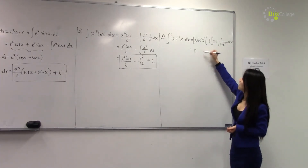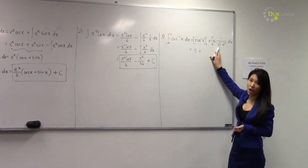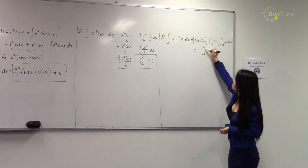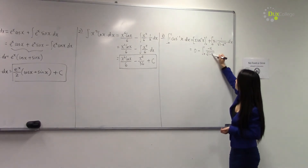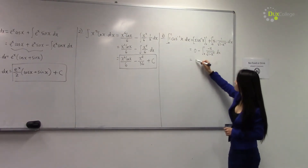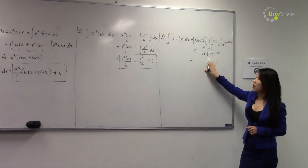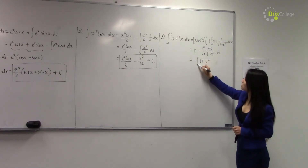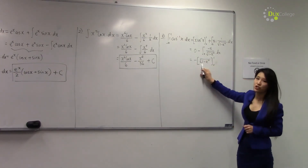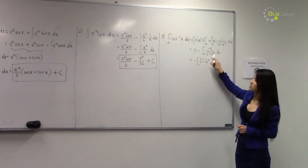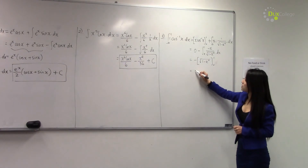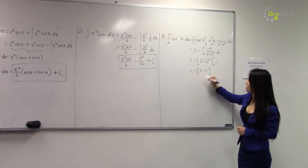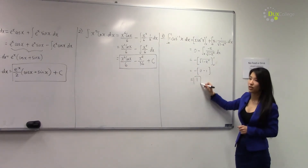For the second part, we can use the reverse chain rule to evaluate this integral. We can differentiate the square root of one minus x squared, and we see that when we differentiate it, we get the integral above. Evaluating from zero to one: putting one in gives zero, and putting zero in gives minus one. So that gives us one as our final answer.